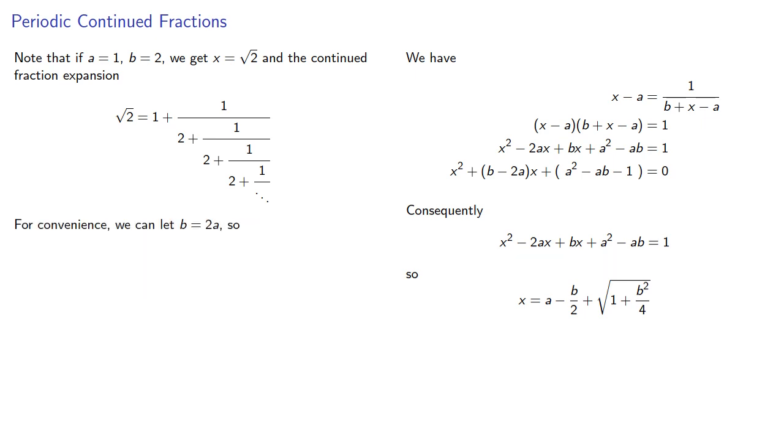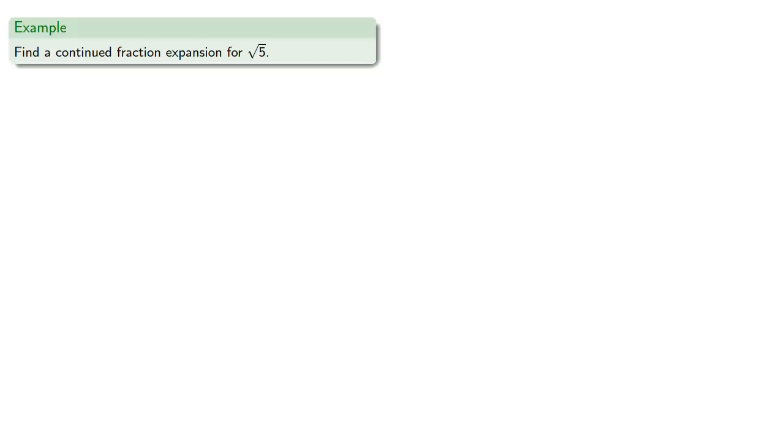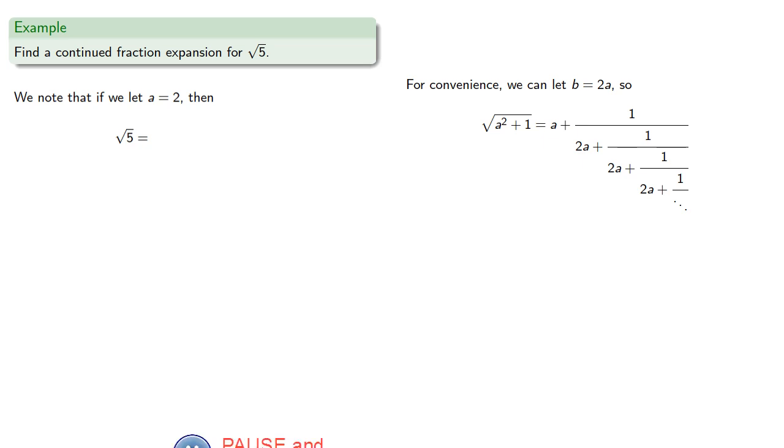For convenience, we can let b equal 2a. What that will do is zero out this portion that isn't under the radical. Then our formula for x gives us... And so in general... This allows us to find things like a continued fraction expansion for square root of 5. Our formula gives us... If we let a equal 2, then we get square root of 5 equal to... And the convergents will be, which gives us successively better approximations to the square root of 5.